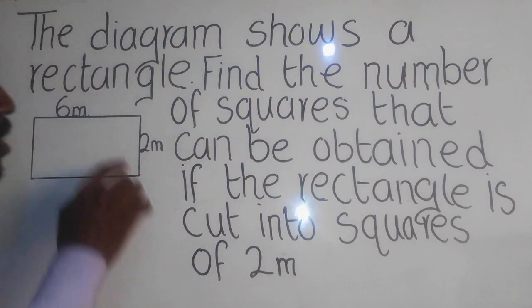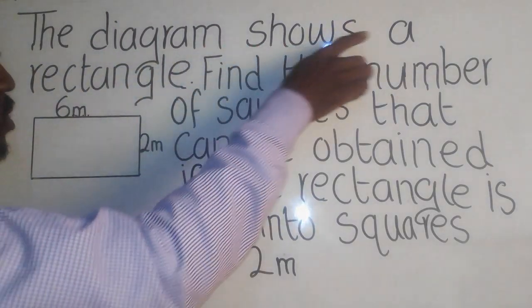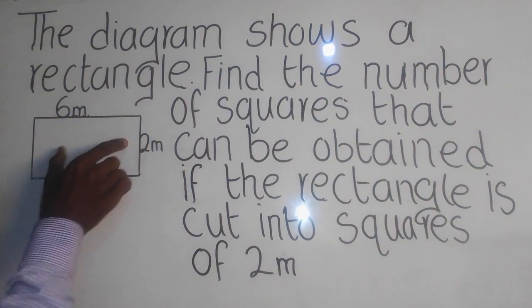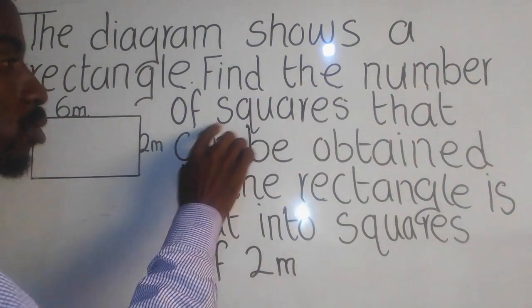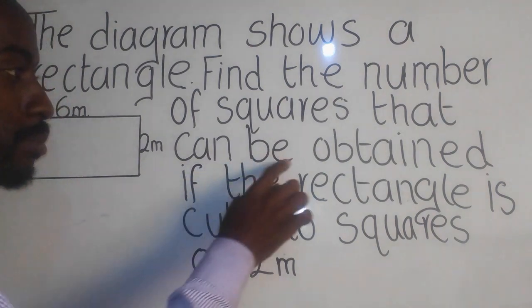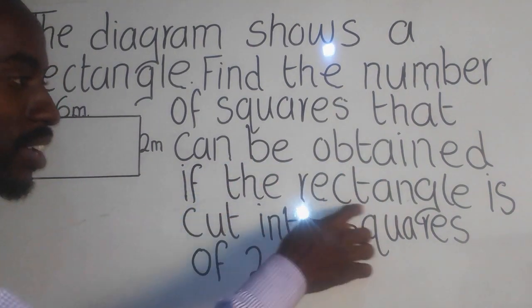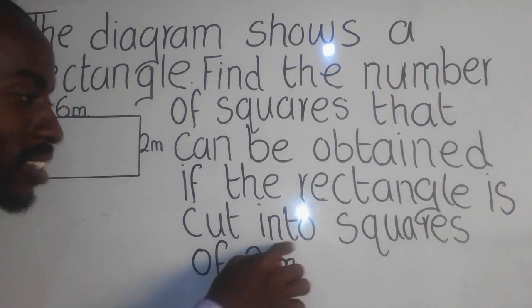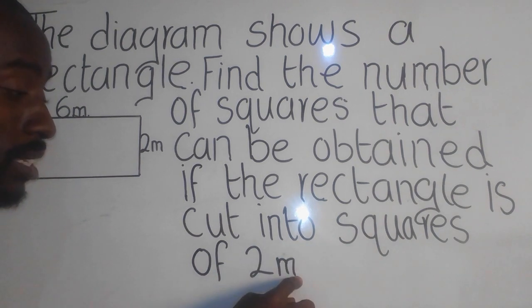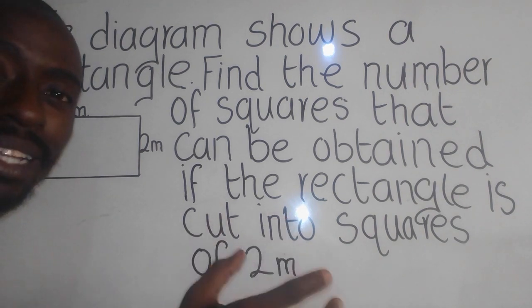A mathematics question that says the diagram shows a rectangle. Find the number of squares that can be obtained if the rectangle is cut into squares of two centimeters. Okay, you need to understand that here we want us to find the number of square figures inside this rectangle.